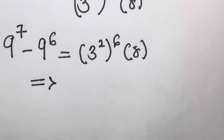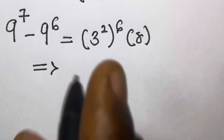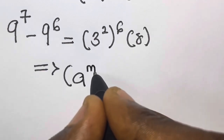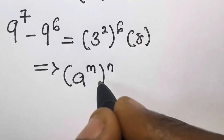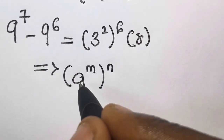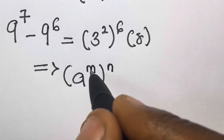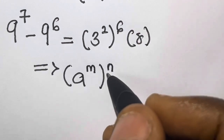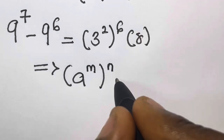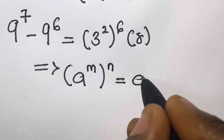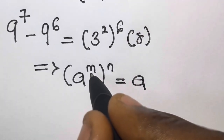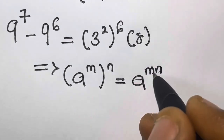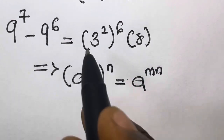Let's recall that if we have A raised to the power M, raised to the power N — this is the product power law. When a number with a certain power is again raised to another power, the powers are multiplied. So this will be A raised to the power M times N, that is MN.